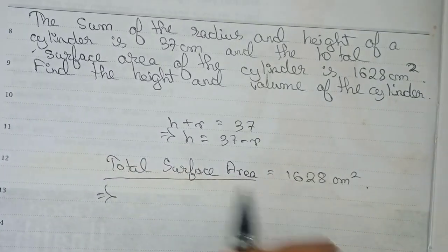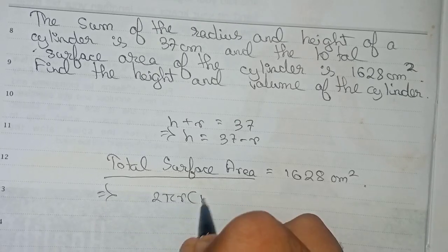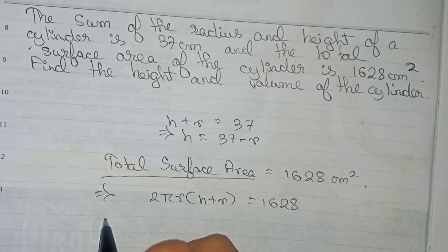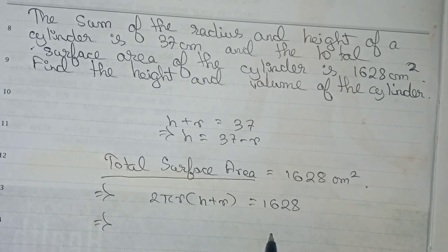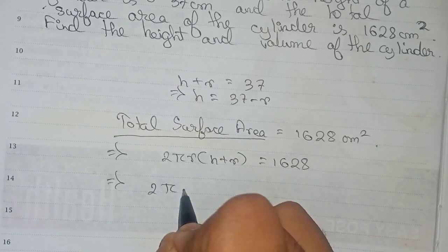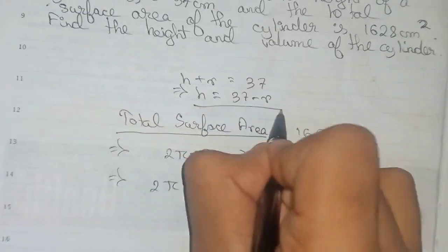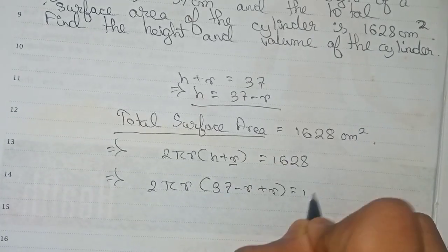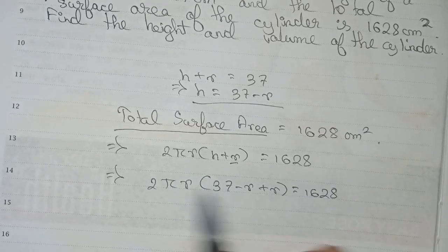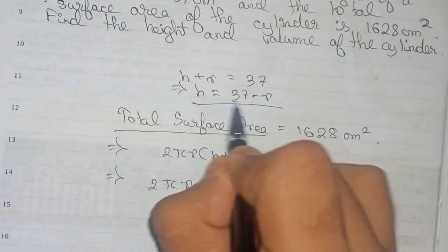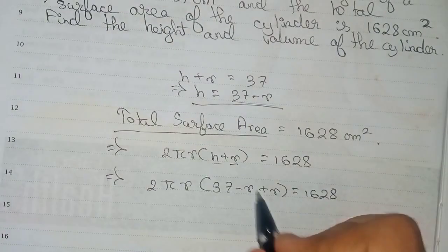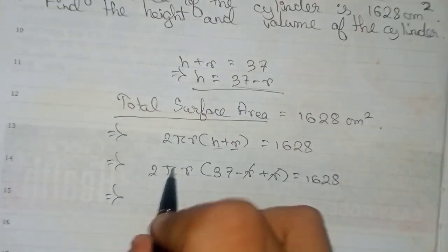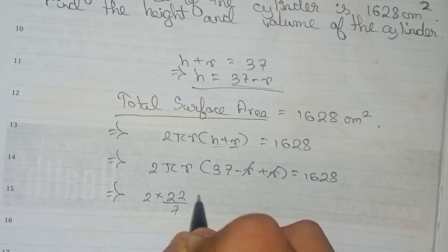The total surface area formula is 2πr(h + r). Substituting 1628 for the total surface area and 37 minus r in place of h, we get 2πr times (37 minus r plus r). The plus r and minus r cancel out, giving us 2 times 22/7 times r times 37 equals 1628.